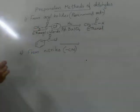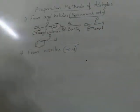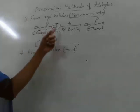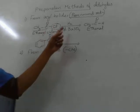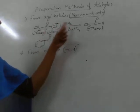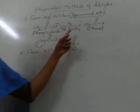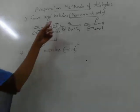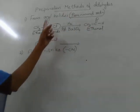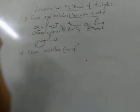This reaction is named Rosenmund reduction. Rosenmund reduction involves the hydrogenation of an acyl chloride or acid halide with hydrogen in the presence of palladium barium sulphate catalyst, where the halogen atom is replaced by — or reduced to — hydrogen.